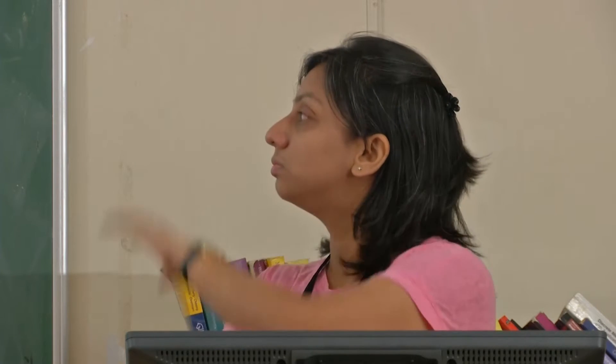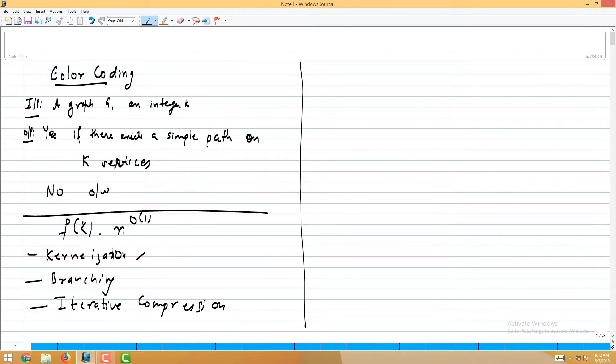So, at least intuitively, none of the strategies we've discussed so far seem natural for attacking this problem. Hence, there is this new technique we're looking at today: color coding — to get an FPT algorithm of the form f(k) times poly(n) for the k-path problem.